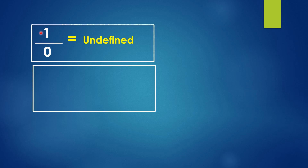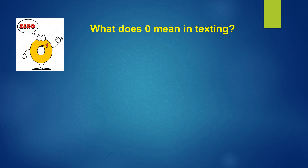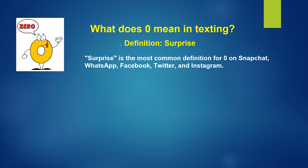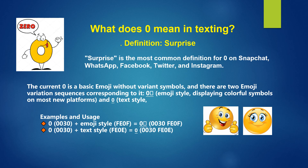In today's video, we have seen that any number divided by zero is undefined, and when zero is divided by zero, it is indeterminate. Zero is a strange number and one of the greatest paradoxes of human thought — it means both the absence of quantity and also everything. Did you know what zero means in texting? It means surprise. All the emoticons and emojis we use are based on the digit zero — using digit codes, these emojis have been created. Such an amazing fact! That's why zero is known as the king of numbers, used in so many ways.